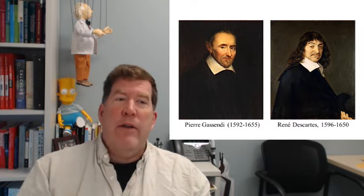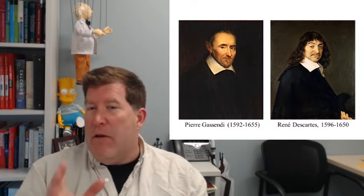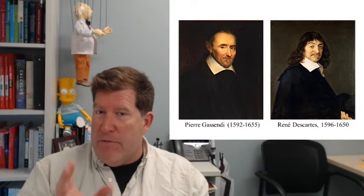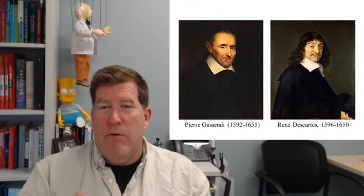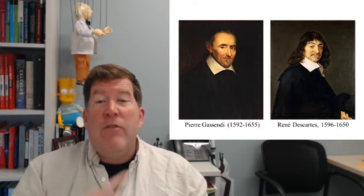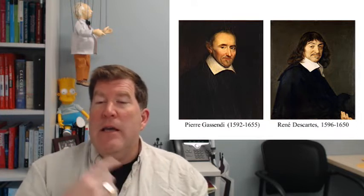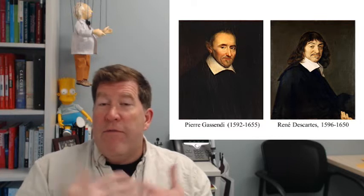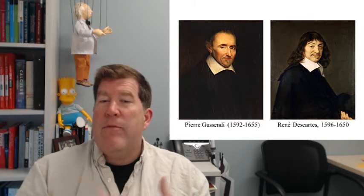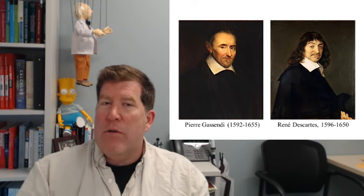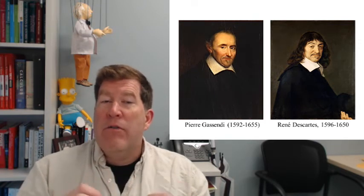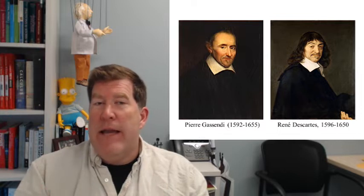In competition with the Huygens' wave theory, there was a different theory that was first put forward by some atomist philosophers, in particular these two gentlemen. One of the great tragedies of the historical portion of this class is that you're going to have to listen to me attempt to pronounce French names. So apologies to anyone who can actually speak French. These two fellows are Pierre Gassendi and René Descartes, who are French philosophers who subscribe to an atomist view of the world, that the world is made up of tiny little particles, and they felt that this could be carried over to the nature of light as well.